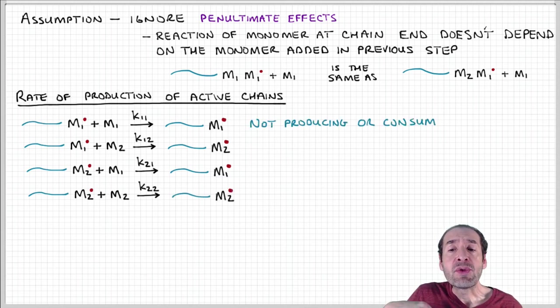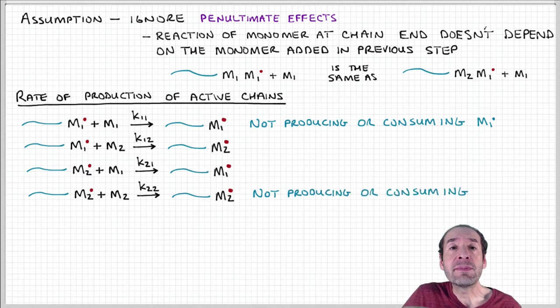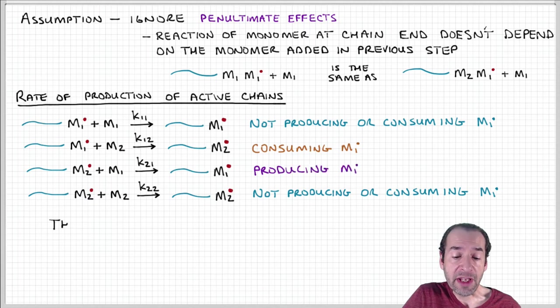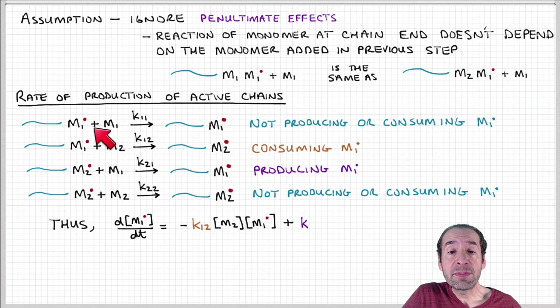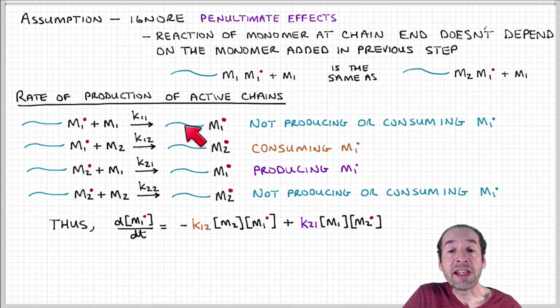Let's think about what could contribute to production or consumption of a chain with an active site associated with monomer one. We can see that this process, we start with a chain that has monomer one with an active site at the end. It adds another monomer one and then yields a chain with monomer one at the end where the active site is located.